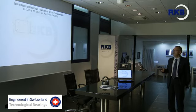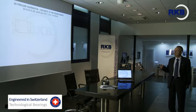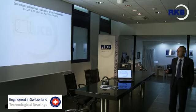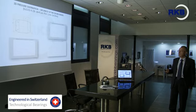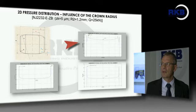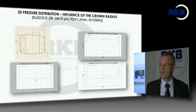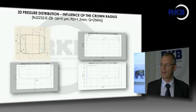Summarizing the influence of the crown radius: the good design is distinguished from two bad designs that produce very high pressure at the end of the contact.